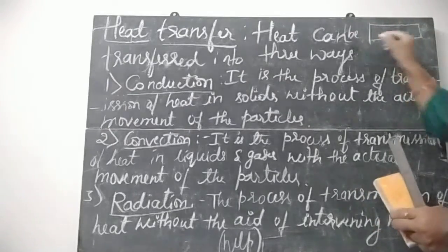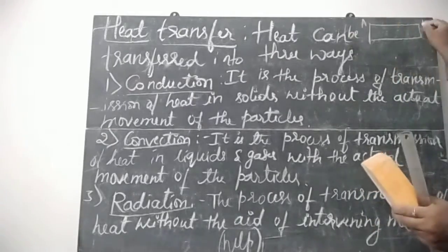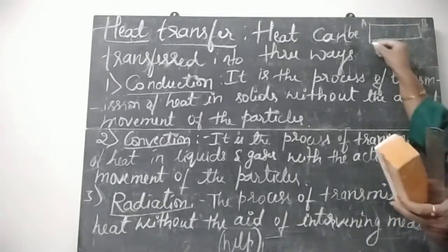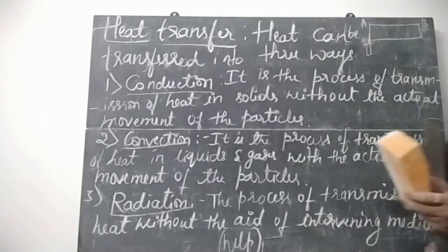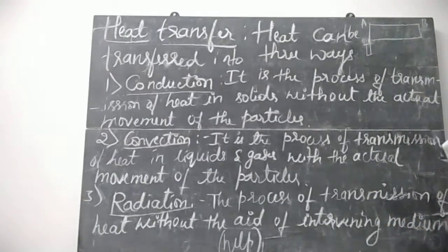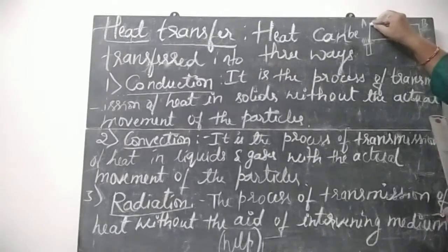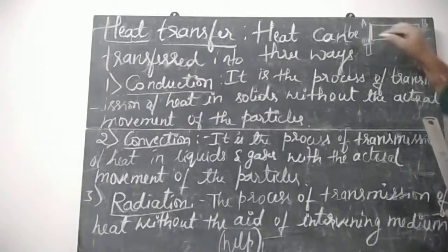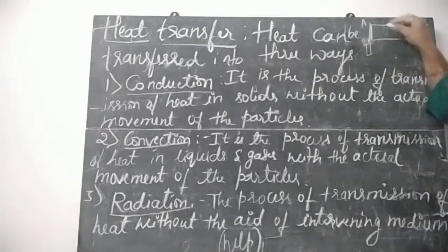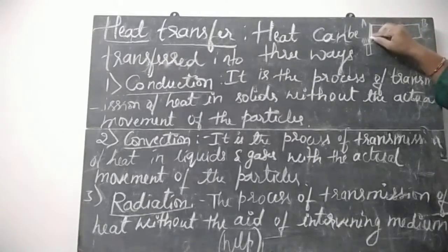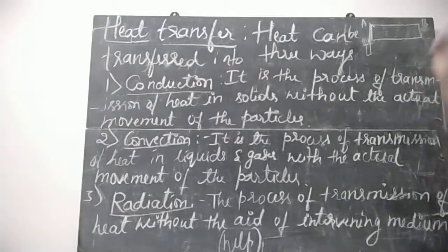The metallic rod has ends A and B. If end A is heated, the particles at end A get heated first. They vibrate and transfer energy to the neighboring atoms.